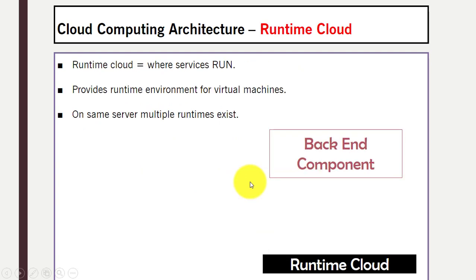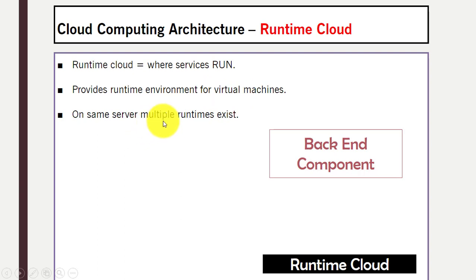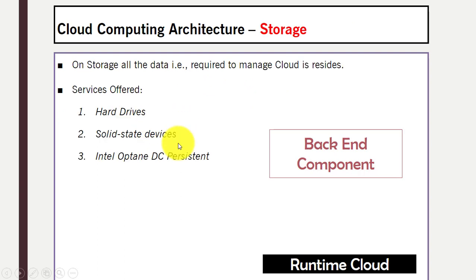Now we have runtime cloud, which is where services run. It provides a runtime environment for virtual machines, and on the same server multiple runtimes can exist. For storage, all the data required to manage the cloud resides here, and different services are offered like solid state devices and hard drives.